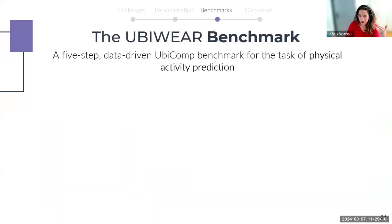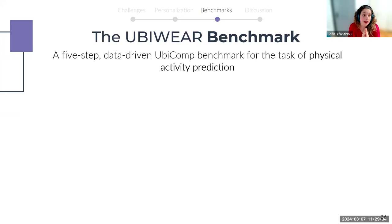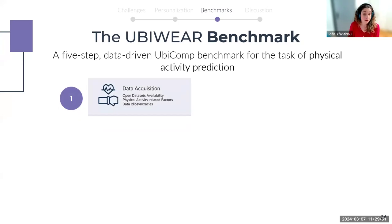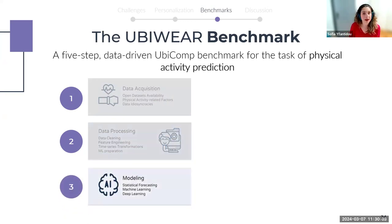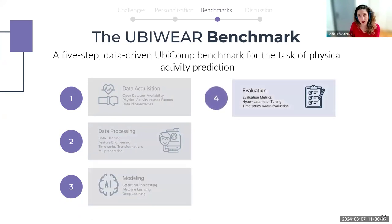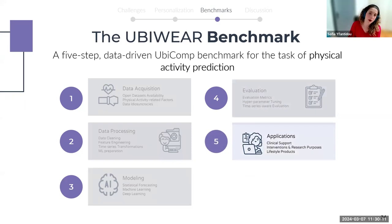The ubicomp domain suffers from a lack of reproducible benchmarks. The lack of benchmarks significantly delayed our implementation in the previous project, as the majority of our time went to data pre-processing and modeling. Hence, we decided to publish our own five-step ubicomp benchmark for the pre-text task of physical activity prediction — specifically, a model that predicts how much activity the user performs on the following day in order to set appropriate goals. The benchmark covers dataset availability and ubicomp data idiosyncrasies, data pre-processing, comprehensive benchmarking of both machine learning and deep learning approaches, and applications across disciplines.